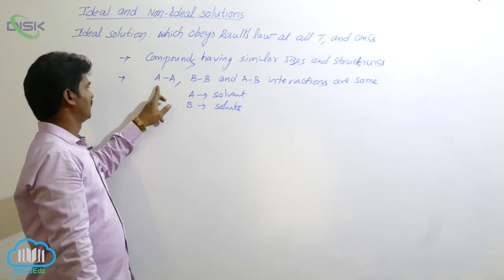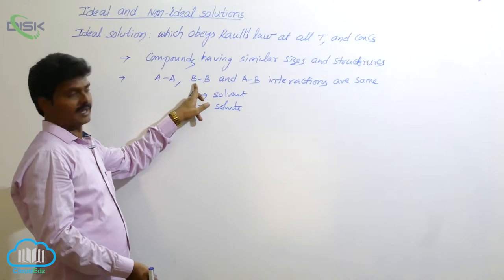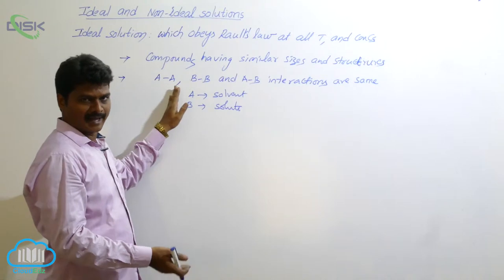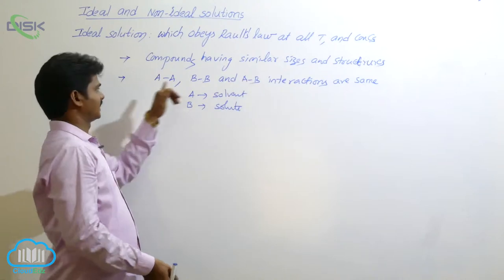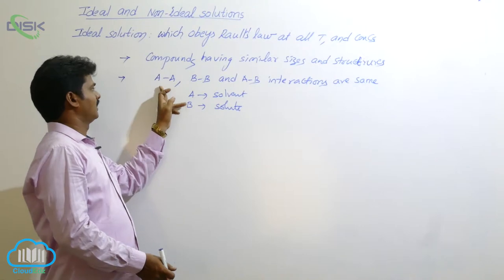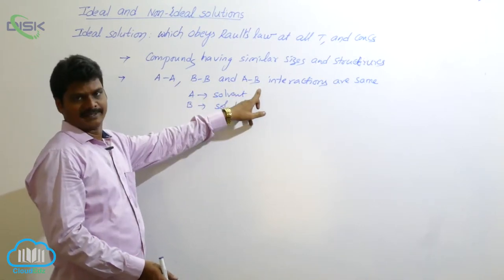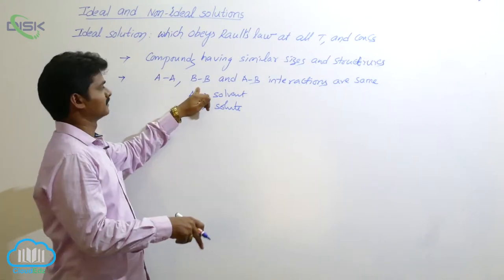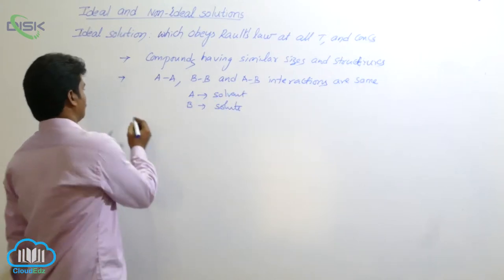That means the energy required to break the AA bond is the same as the energy to break the AB bond, and to form a bond between A and B. In bond breaking, energy is required; in bond formation, energy is released. Since A-A, B-B, and A-B interactions are the same, the energy required for breaking bonds AA, BB, and forming AB bonds are all equal.